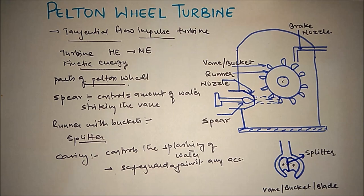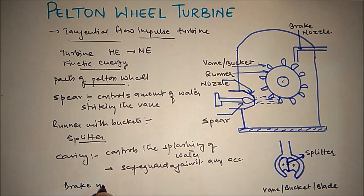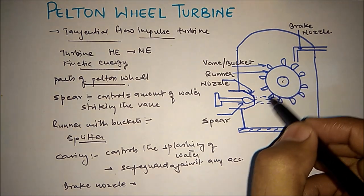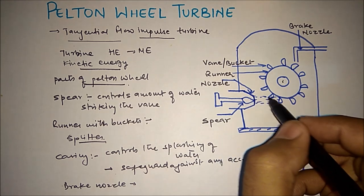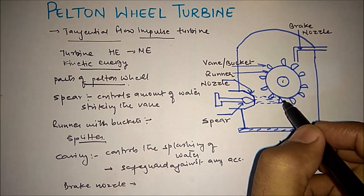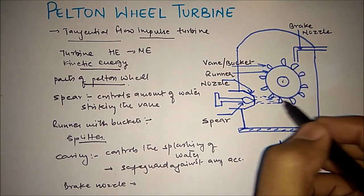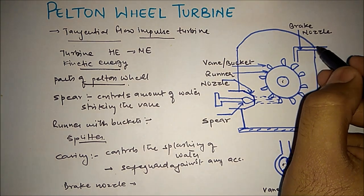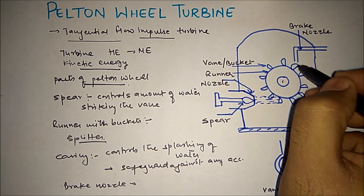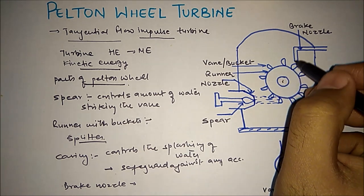The last part is the brake nozzle. When the turbine is to be stopped, the nozzle is closed completely — the spear is pulled inside completely — so the jet of water stops from the main nozzle. Still, the runner continues rotating due to inertia. In order to stop it in a very small time, water is entered from the brake nozzle in the opposite direction to reduce the speed and stop the runner quickly.